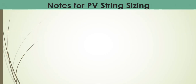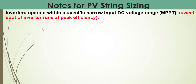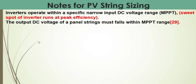Some notes on string sizing: the inverter operates within a specific narrow input DC voltage range called the Maximum Power Point Tracking (MPPT) range, also called the 'sweet spot' for inverter peak efficiency. The output DC voltage of the module strings must fall within the MPPT range of the inverter. This is a very important issue that must be taken into consideration.